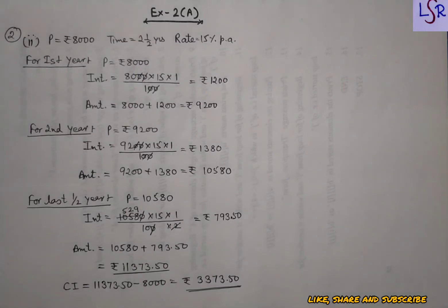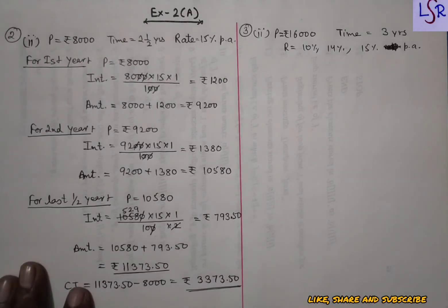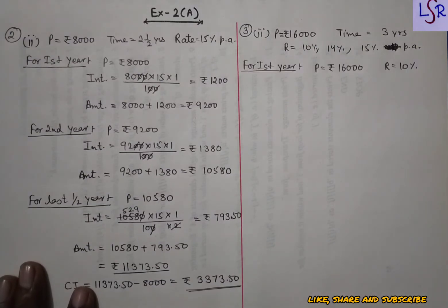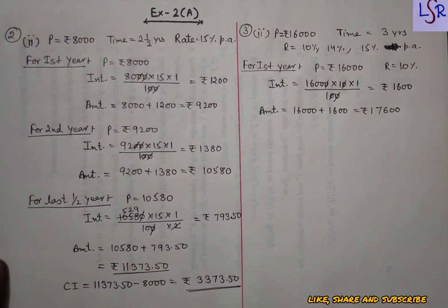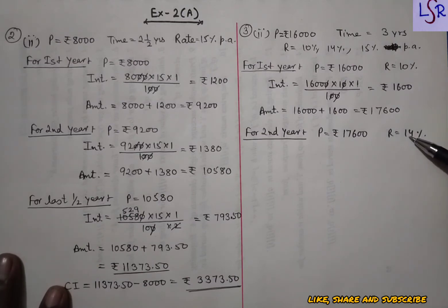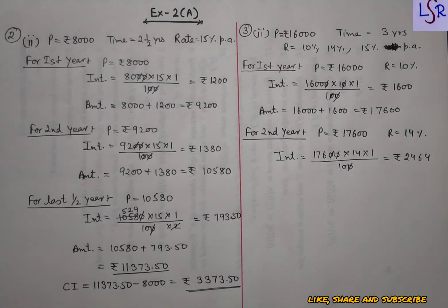Now question number 3: calculate the amount and compound interest on 16,000 rupees in three years when the rates of interest for successive years are 10 percent, 14 percent, and 15 percent respectively. Principal is 16,000, time is three years, with three different rates for each year. For the first year with 10 percent, interest comes to 1600 and we get the first year amount. For the second year, this amount becomes the principal and the rate is 14 percent. We calculate interest as 2464 and the amount at the end of the second year is 20,064 rupees.